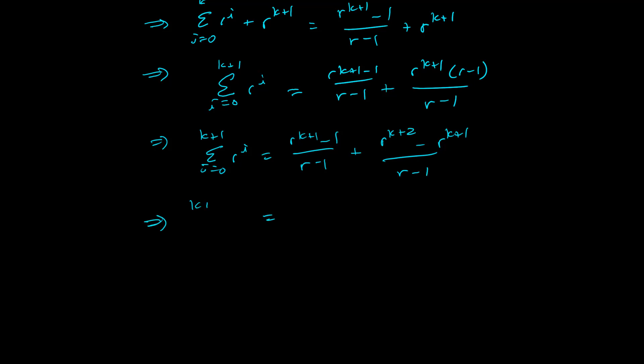And it's just too good to be true. It works out so nicely, because when I bring these two things together, notice that the r to the k plus 1s actually subtract out. And so I end up with exactly what I was hoping to get, r to the k plus 2 power minus 1 over r minus 1. That's exactly what we wanted to show. That's the k plus 1th domino. It's falling over.